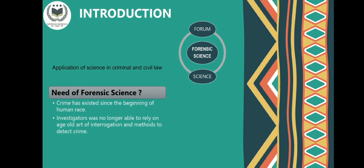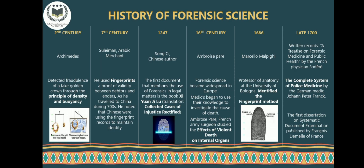Dating back to the 2nd century, the development of an accurate way of measuring density by Archimedes marks a watershed in the use of objective methods — not just in forensics but also in the physical sciences. In the 7th century, Suleiman, an Arabic merchant, stayed in the city of Guangzhou and noted that the Chinese were using fingerprint records to maintain the identities of newly arrived foreigners.